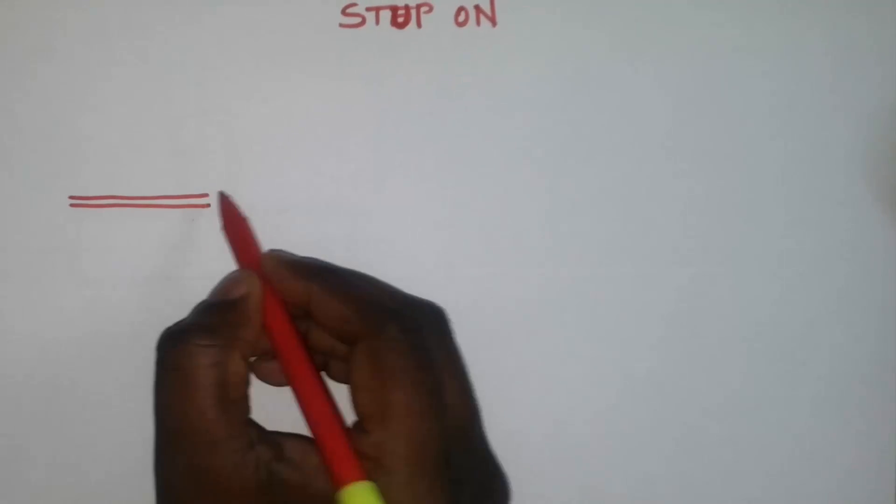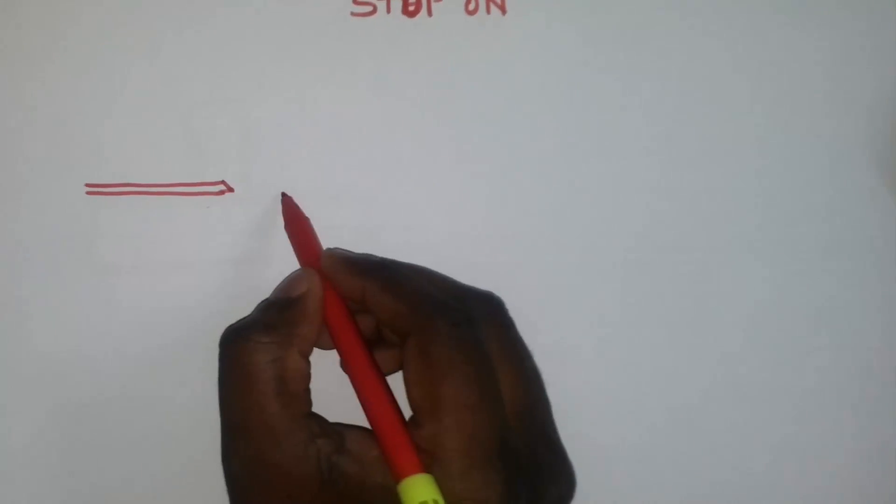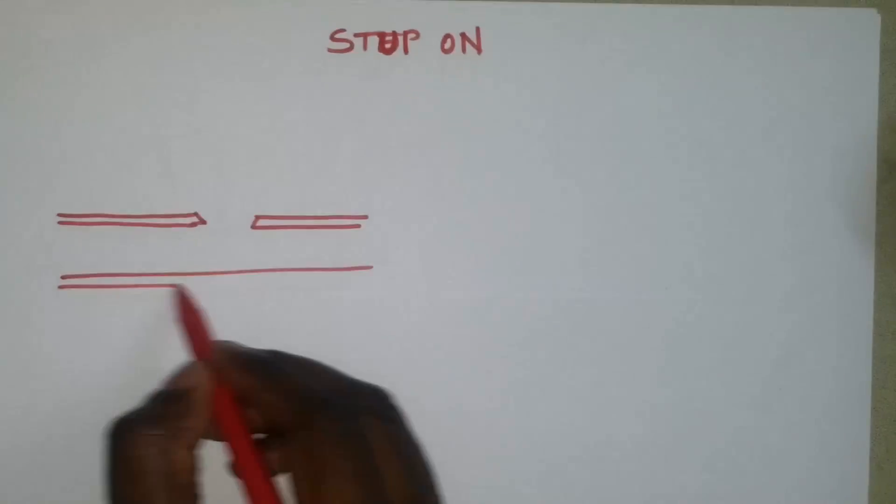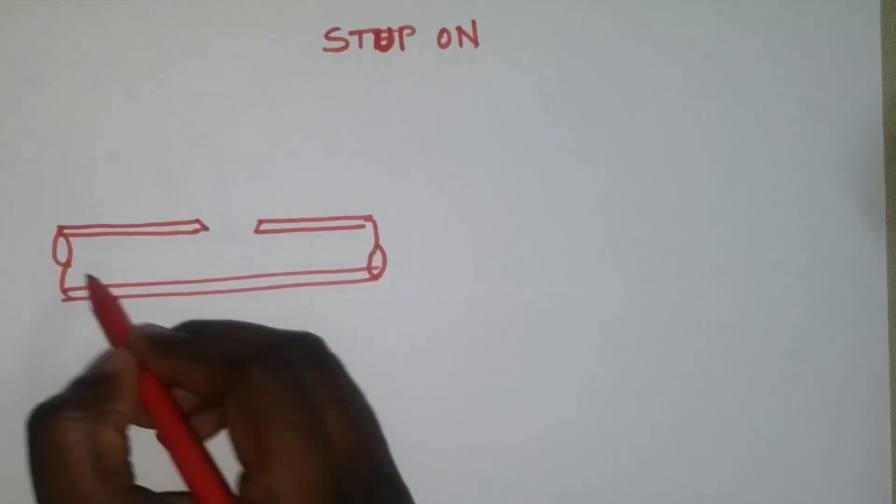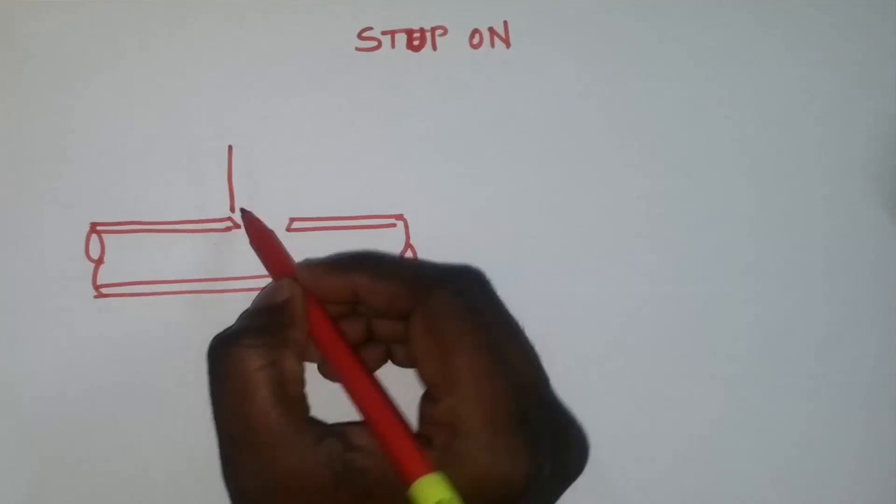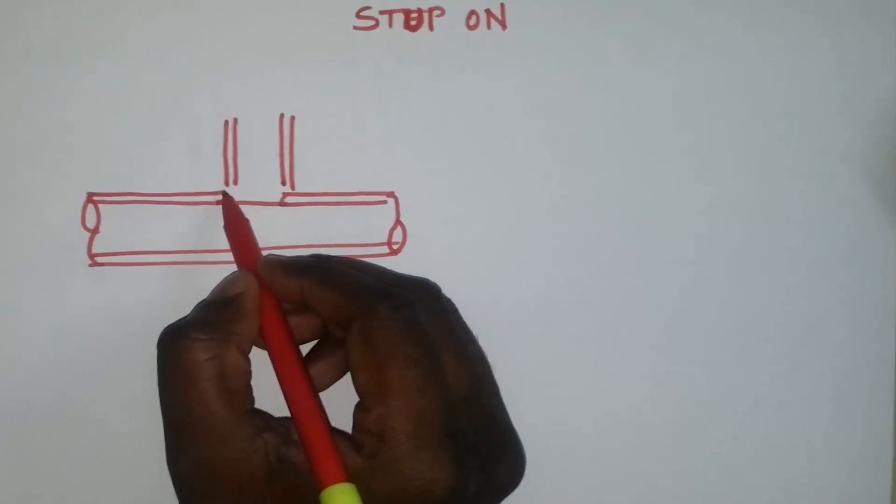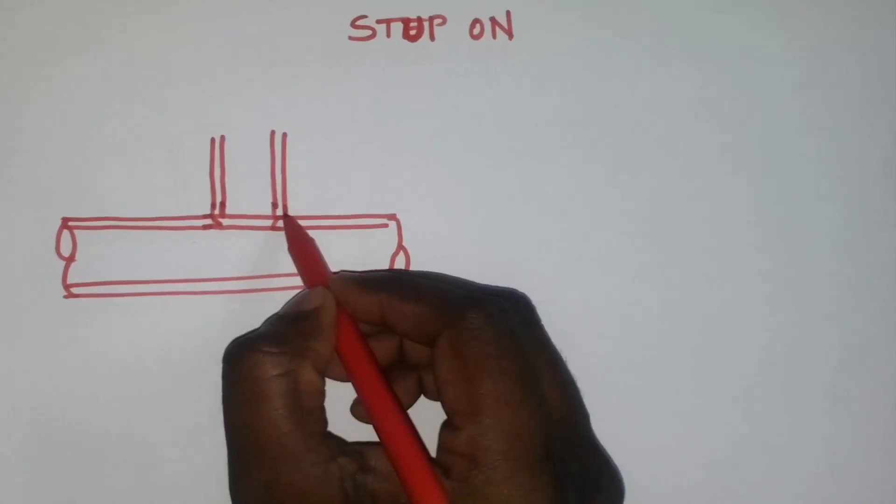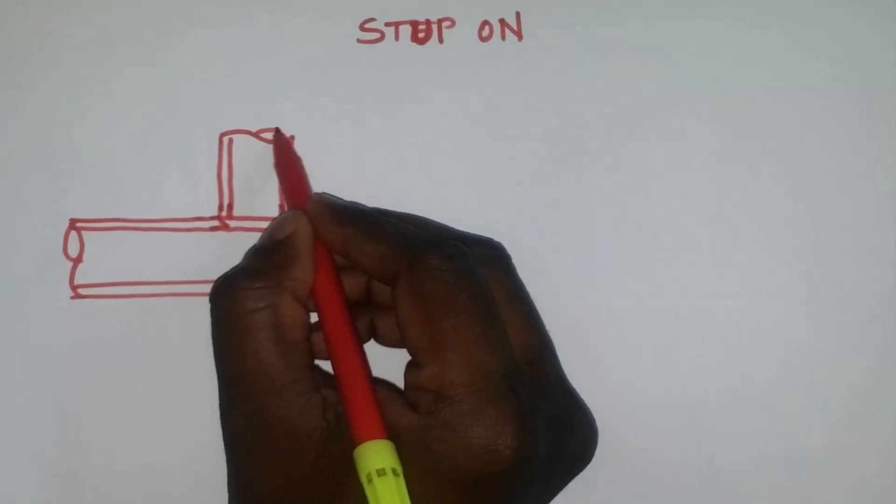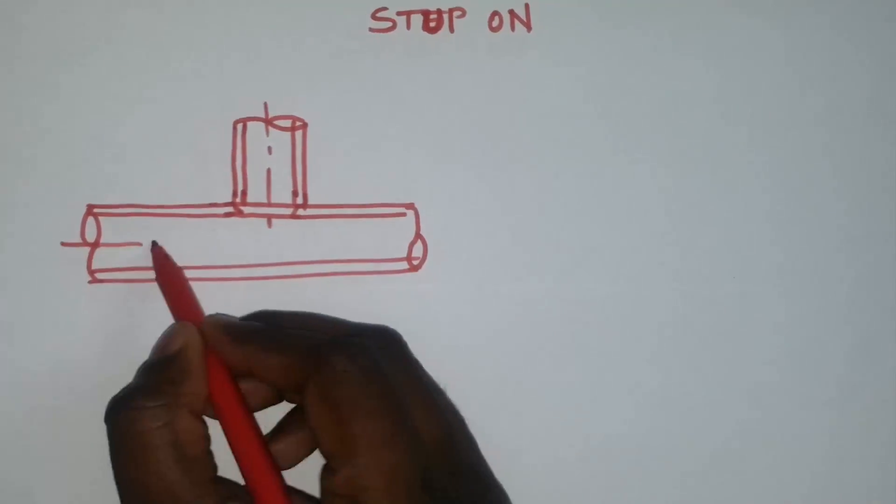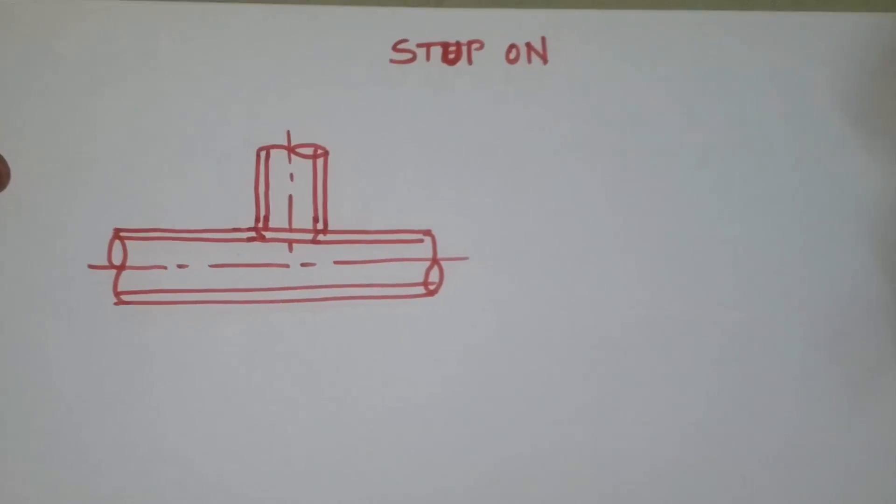Now, method number two, stub on pipe branch connection details. For stub on, the stub extends only to the outside of the main pipe. The stub may be beveled, but if not, only a fillet weld can be done.